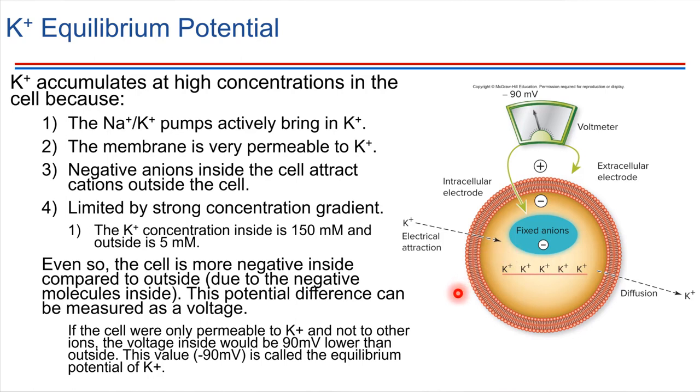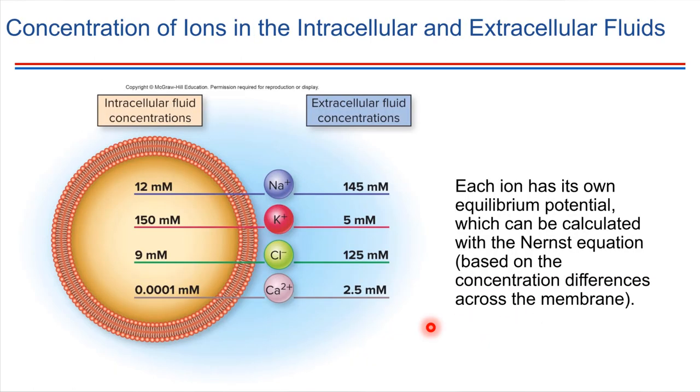So just to show some of the more common examples of ions that we will be encountering in cells. We've just been looking at potassium. Due to this concentration difference, we just saw that the potential difference is minus 90. Each of these other ions, notice they have their own concentration differences. So it turns out for each of these, an equilibrium potential can be determined.